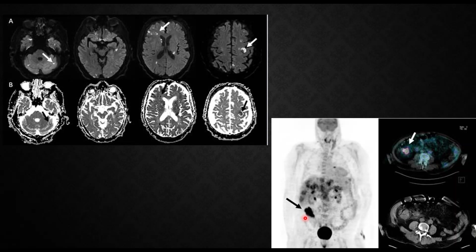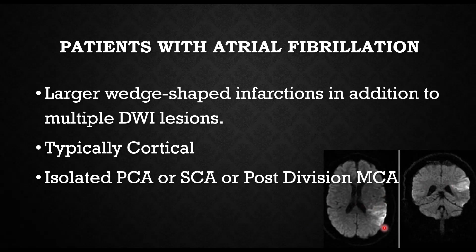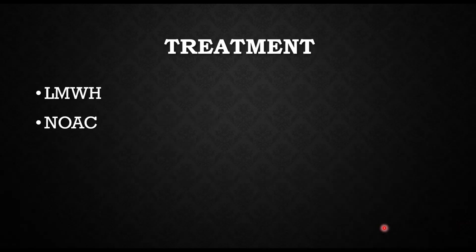How do you differentiate cancer-associated stroke from atrial fibrillation and cardioembolic stroke? Atrial fibrillation strokes typically have large wedge-shaped infarctions that are cortical. You can see isolated PCA infarcts, isolated superior cerebellar artery strokes, or posterior division MCA strokes — a wedge-shaped pattern is fairly characteristic of atrial fibrillation.